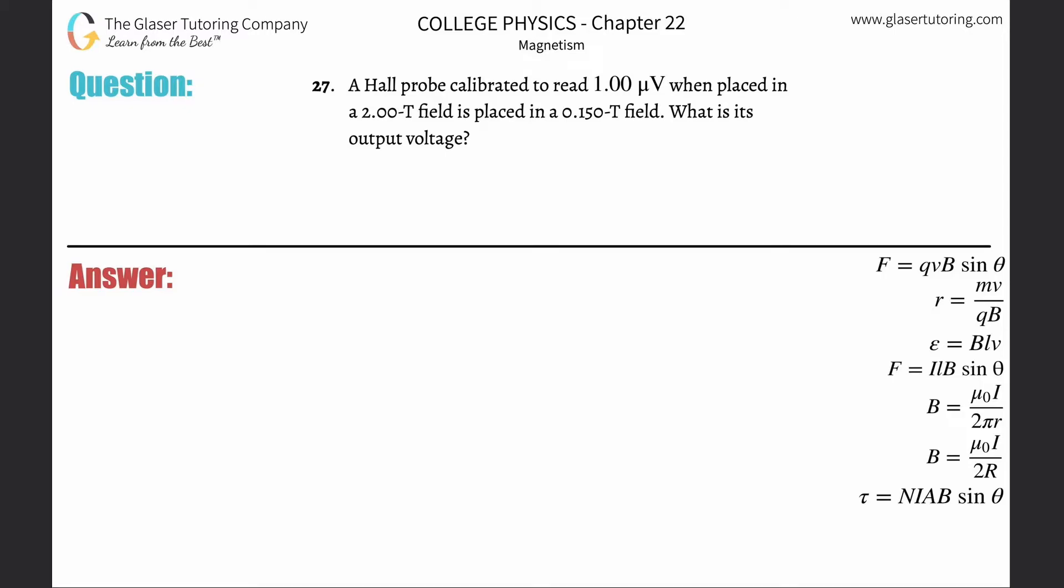Number 27: A Hall probe calibrated to read 1 microvolt when placed in a 2 Tesla field is placed in a 0.15 Tesla field. What is the output voltage? Check out number 22 where I talked about Hall voltage.